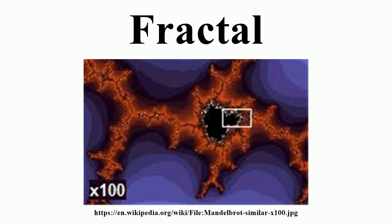Qualitative self-similarity, as in a time series. Multifractal scaling, characterized by more than one fractal dimension or scaling rule. Fine or detailed structure at arbitrarily small scales. A consequence of this structure is fractals may have emergent properties, irregularity locally and globally that is not easily described in traditional Euclidean geometric language. For images of fractal patterns, this has been expressed by phrases such as 'smoothly piling up surfaces' and 'swirls upon swirls.'